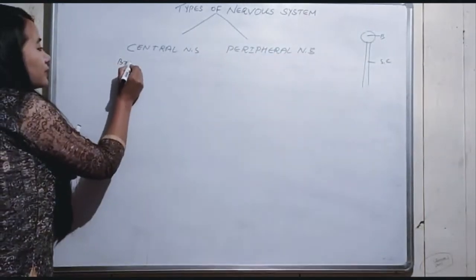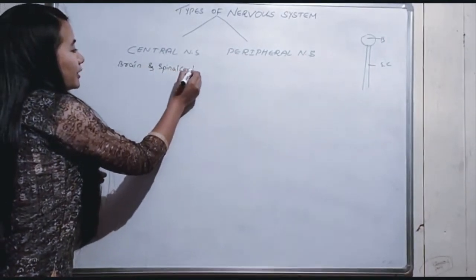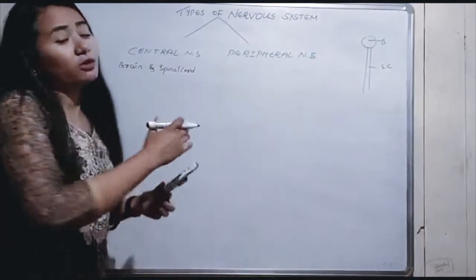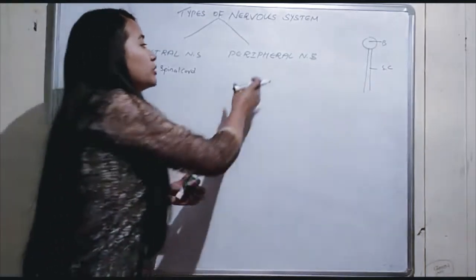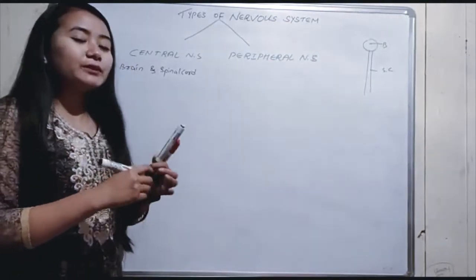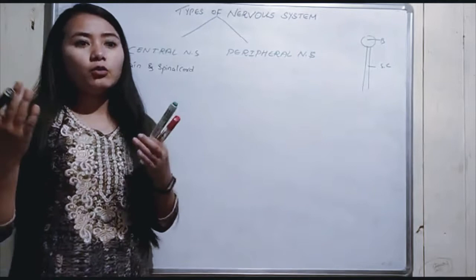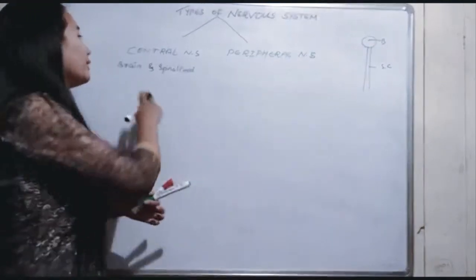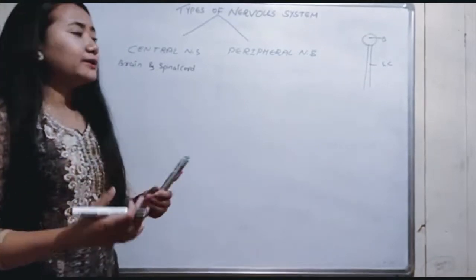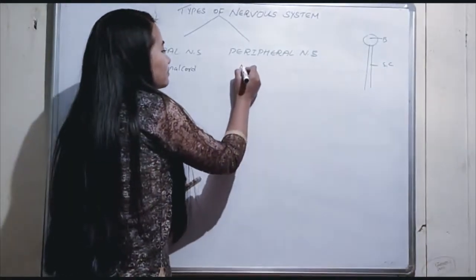This is the Central Nervous System — brain and spinal cord. This is the Peripheral Nervous System, which mainly consists of nerves.